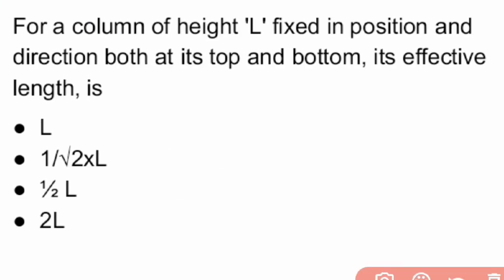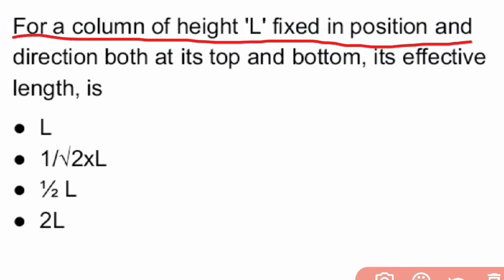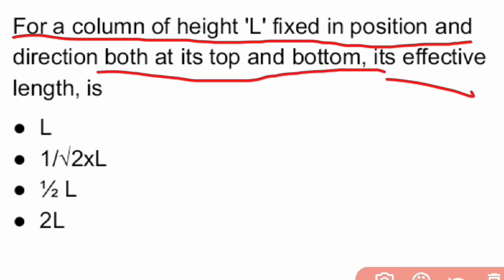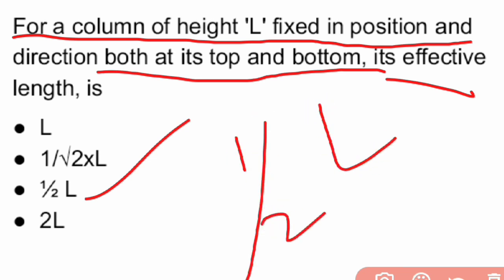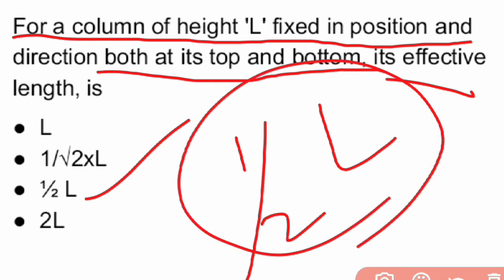Next question: for a column of height L, fixed in position and direction at both its top and bottom, what is its effective length? The effective length is half the height of the column, i.e., 0.5L.